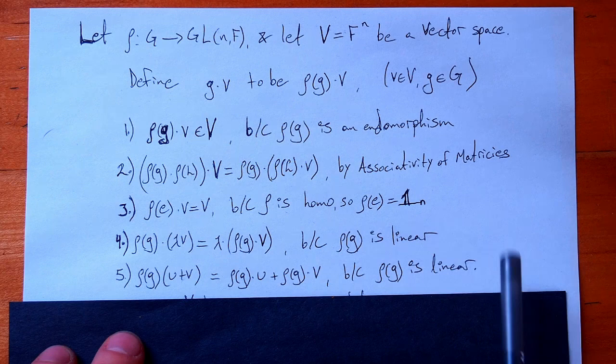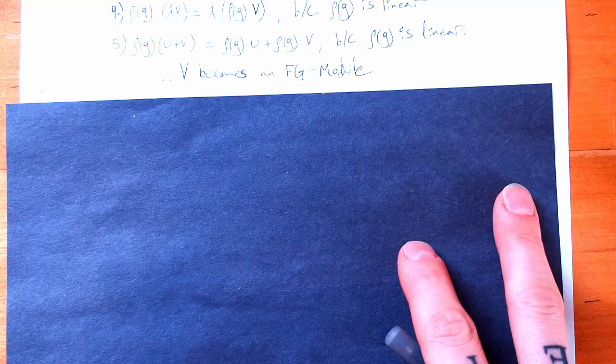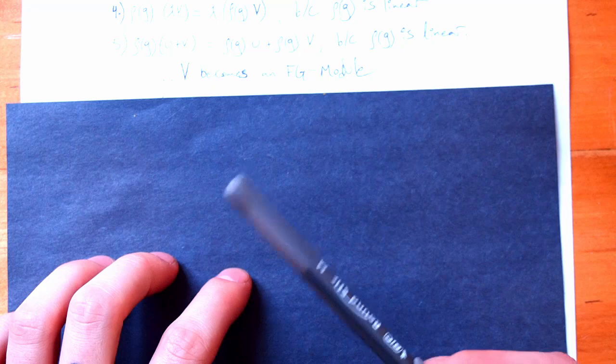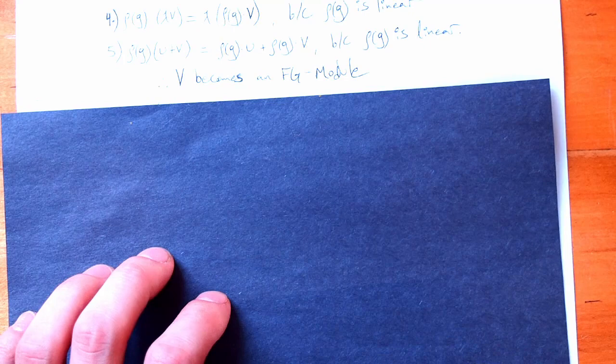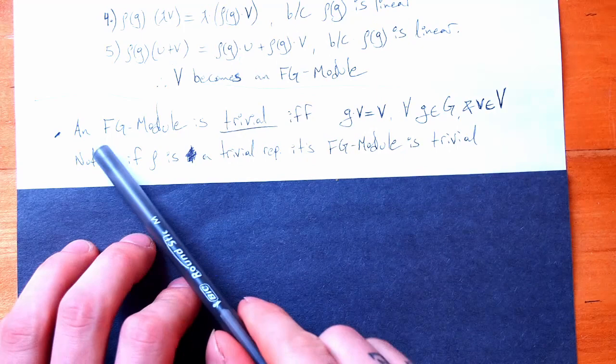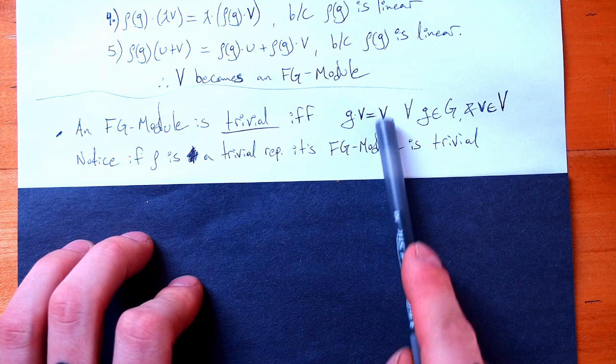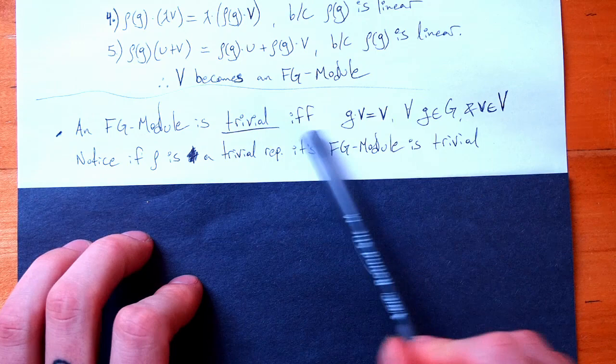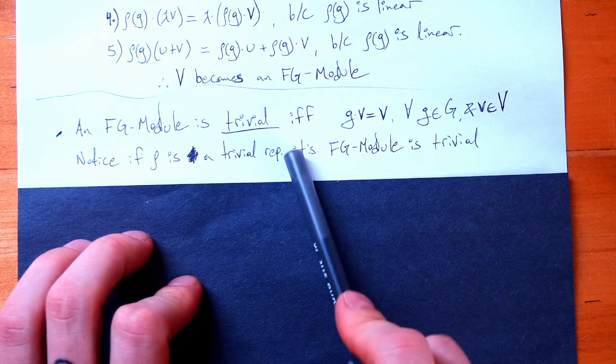Now I want to talk about some terminology from representations and how it carries over to FG modules. An FG module is trivial if and only if all group elements acting on any vector always give back that same vector — for any g in our group and any v in our vector space. If this is always true, every group action does nothing and just leaves the vector unchanged. Our action tells us nothing more about that space. Notice that if ρ is a trivial representation, its associated FG module will be trivial.